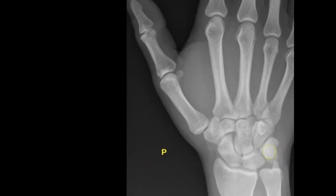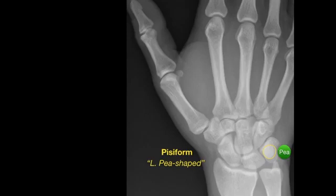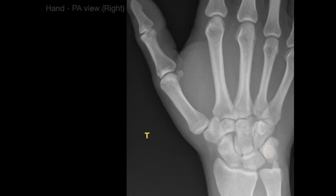Next we have P — that one right there — which is pisiform, Latin for pea-shaped, because it looks like a green pea. This is a sesamoid bone. It's the last of the eight carpal bones to form, and it's sesamoid because it's really in the tendon of the flexor carpi ulnaris. The only carpal bone it articulates with is the triquetrum.